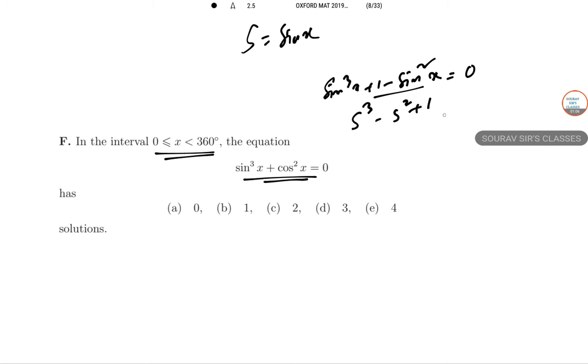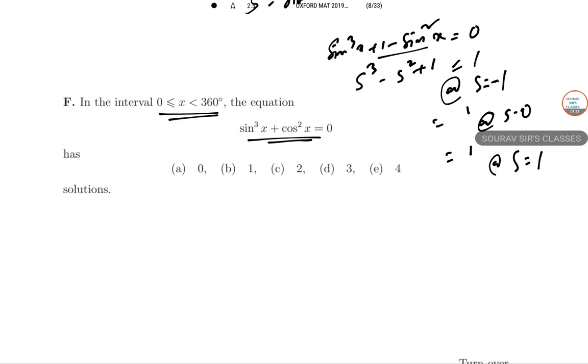This will be equal to 1 at s = -1, equal to 1 at s = 0, and equal to 1 at s = 1. So -1, 1, and these three values. The turning points are at s = 0 and s = 2/3 if you just solve it.